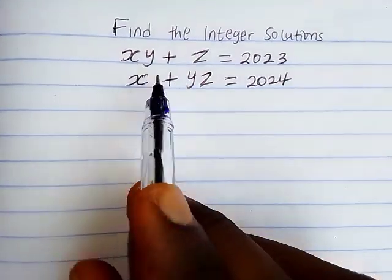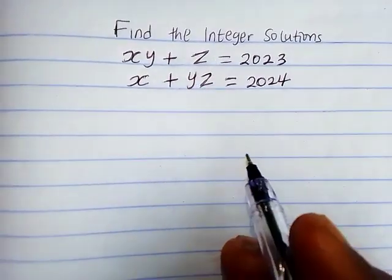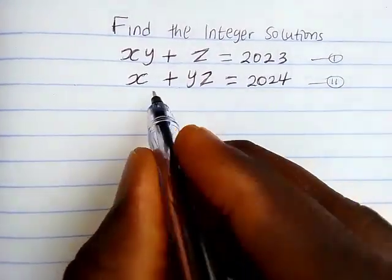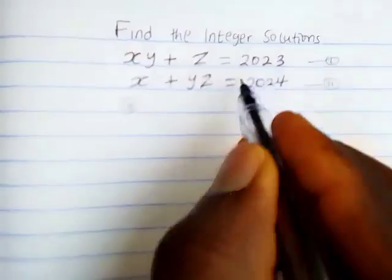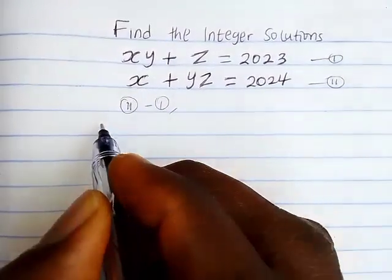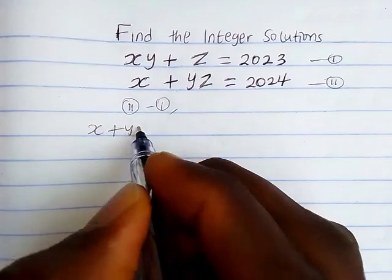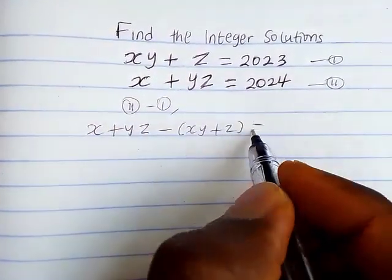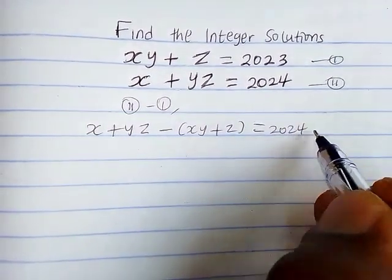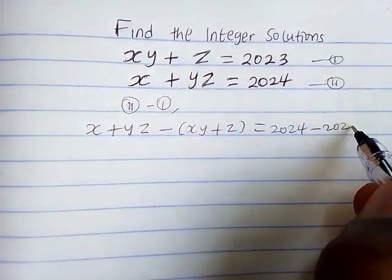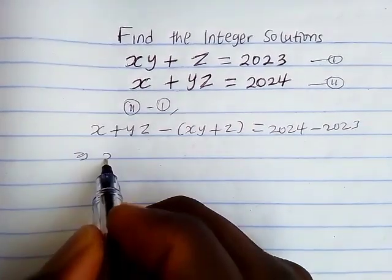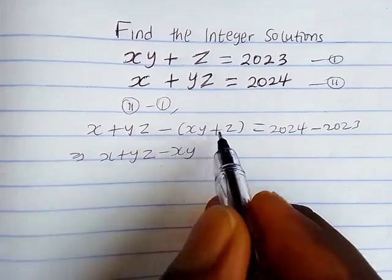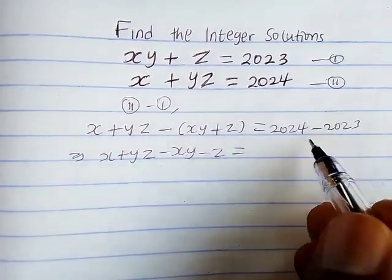How do we find the value of x, y, and z in this equation? Let's call this equation 1 and let's call this equation 2. Now we are going to subtract equation 1 from equation 2 — that is equation 2 minus equation 1. So we have x plus yz minus xy plus z equals 2024 minus 2023, which gives us minus xy minus z equals 1.